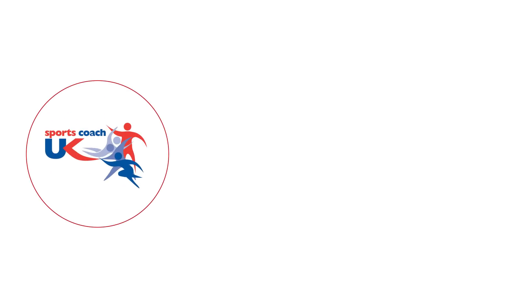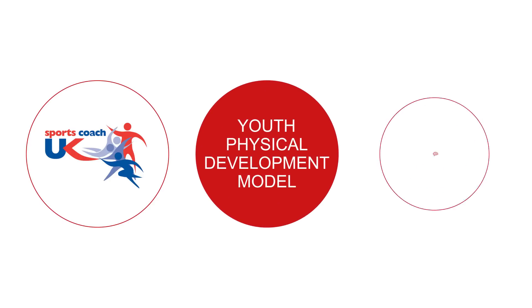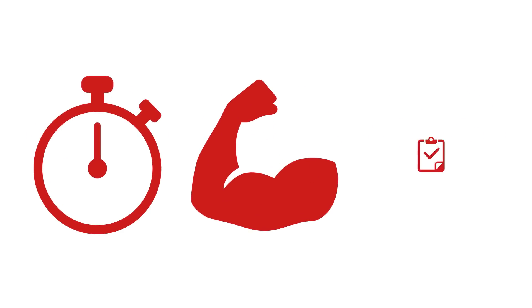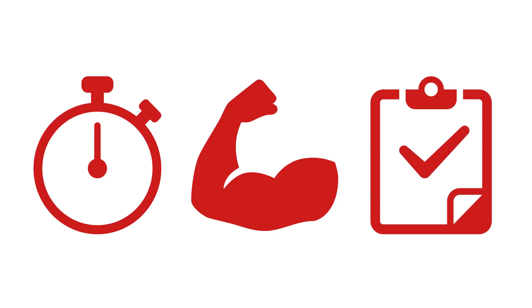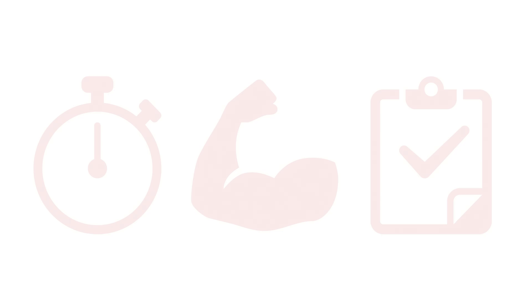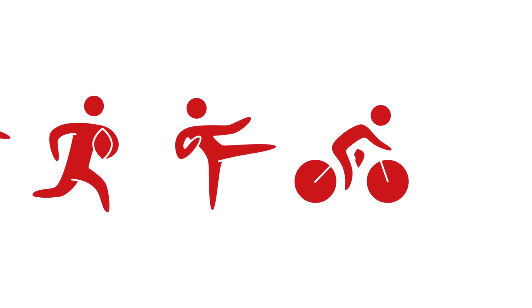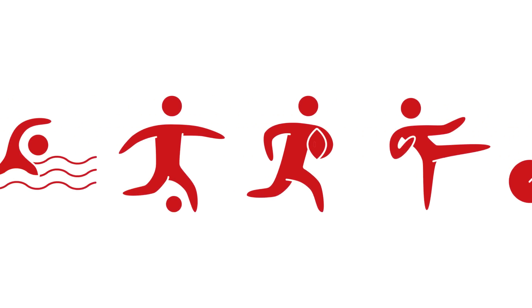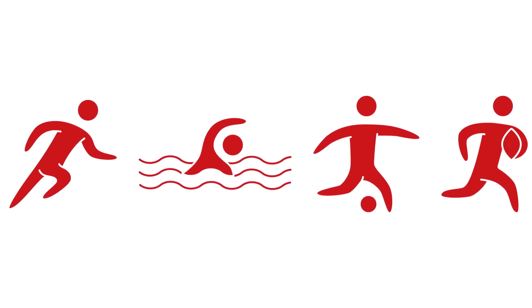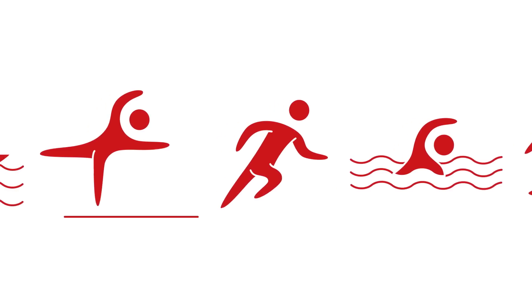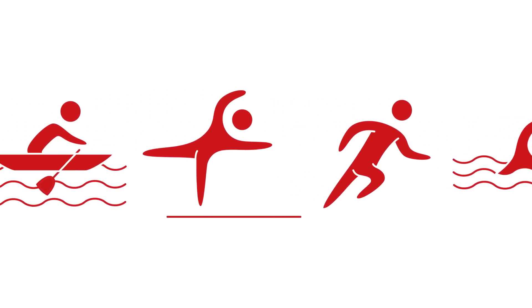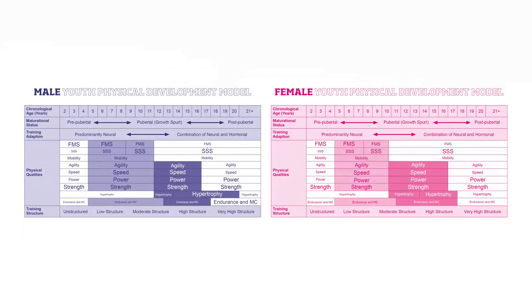Recently Sports Coach UK have been looking at new research and models developed from the principles laid out in previous models. For example, the youth physical development model has built extensively on previous thinking. It suggests that certain types of training, like strength, should be a crucial part of a child's athletic development from the outset. The work of world-leading experts Doctors Rhodri Lloyd and John Oliver of Cardiff Metropolitan University is based on evidence that young athletes of both genders respond to training throughout childhood and adolescence. The aim of this video is to bring the model to life by explaining the terms it uses and the differences between the male and female versions.